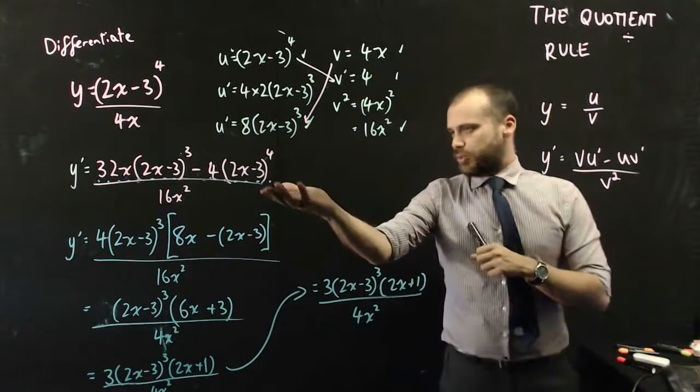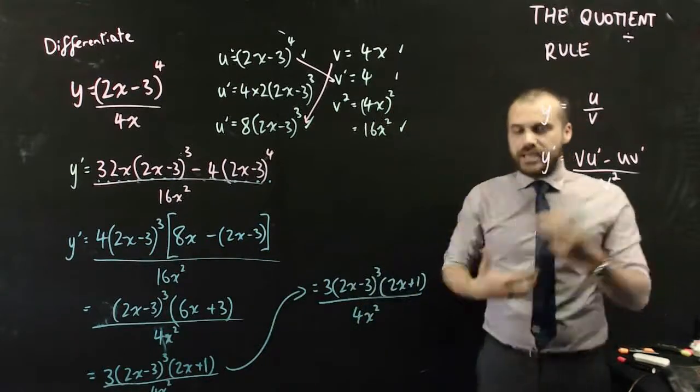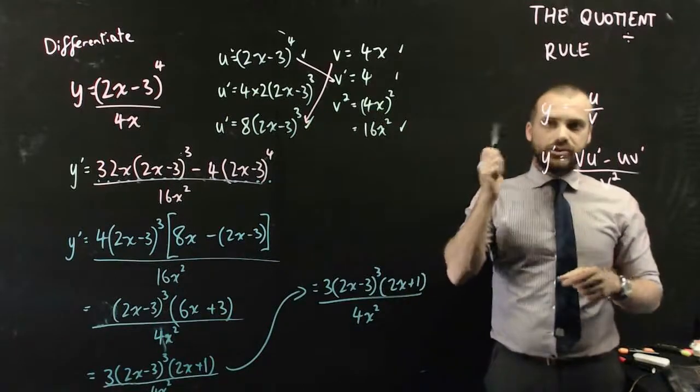All right, so, up to the pink is where we've derived the thing itself. Onwards is where we've neatened it up, factorised it, made it nice and pretty. That's the quotient rule.